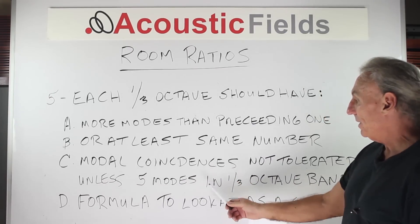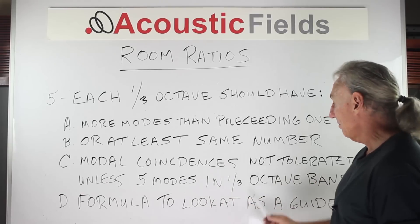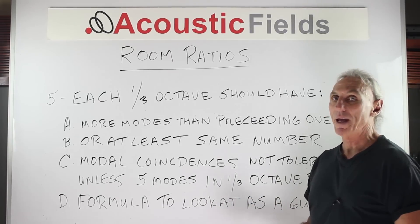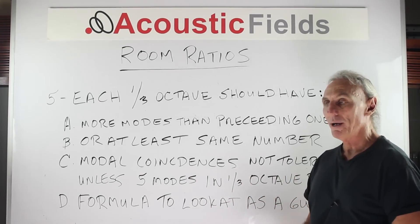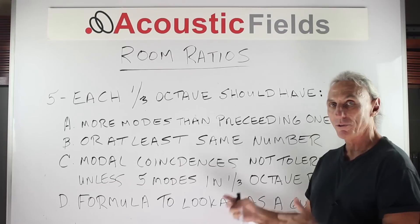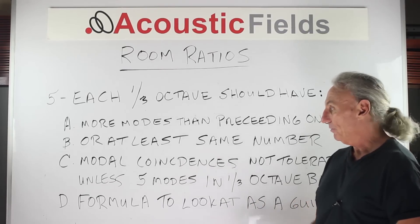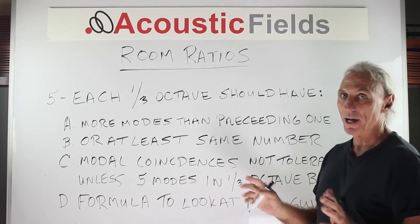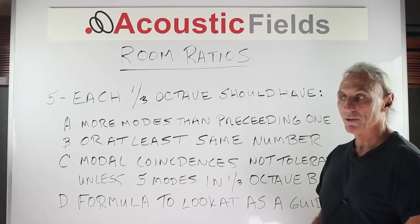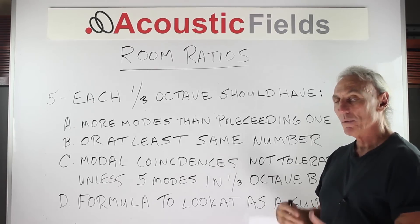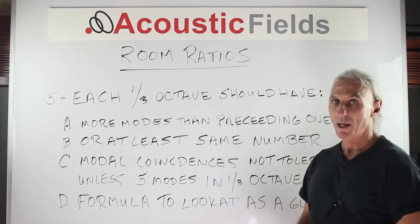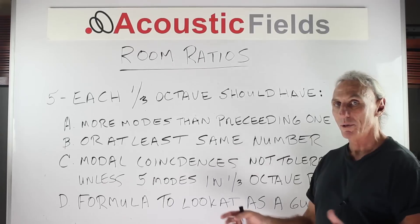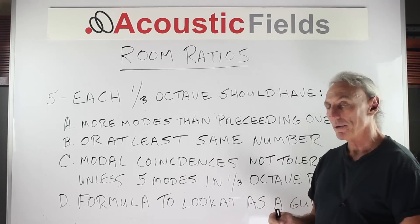Unless you had five modes in a one-third octave band, we're going to say that modal coincidences are simply not tolerated. If you have two dimensions the same, we're going to have to change that physically — by adding a wall to your room or shortening a dimension.